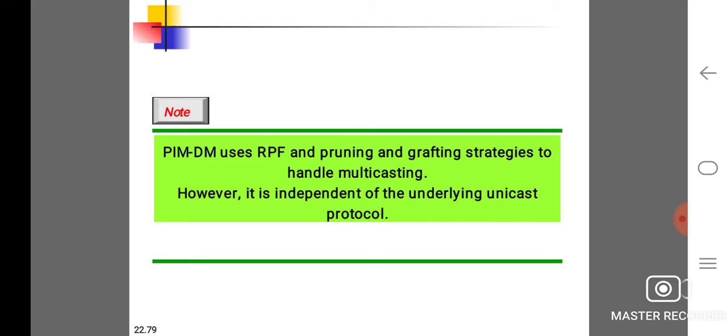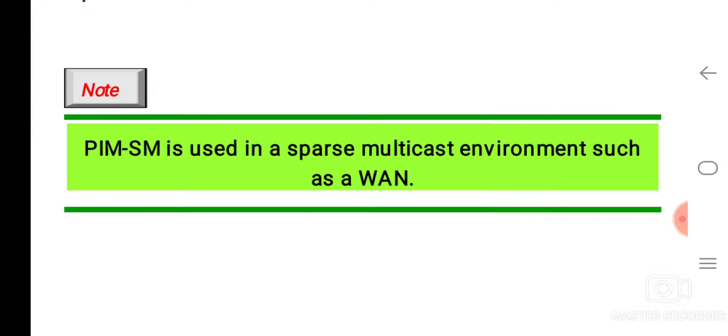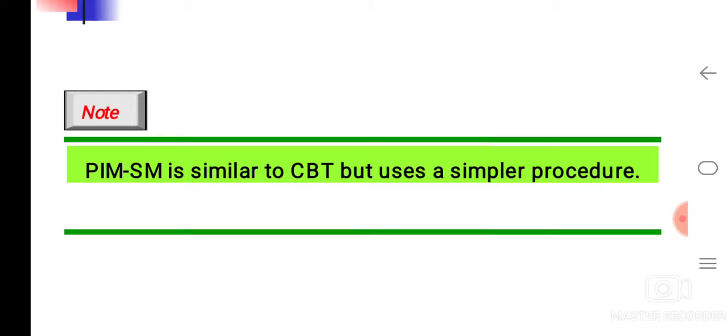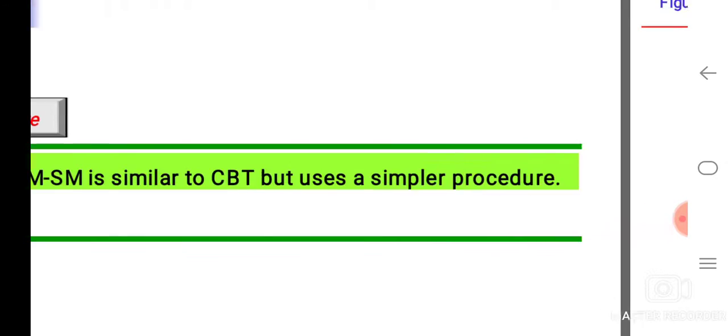PIM-DM uses RPF and pruning and grafting strategies to handle multicasting. However, it is independent of the underlying unicast protocol. PIM-SM is used in sparse multicast environments such as a WAN. PIM-SM is similar to CBT but uses a simpler procedure.